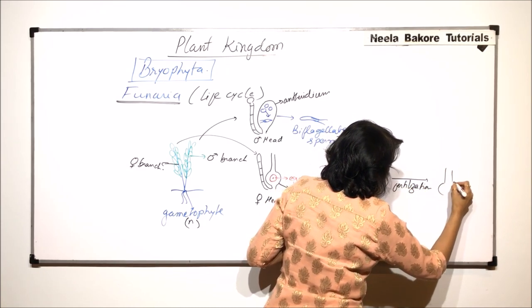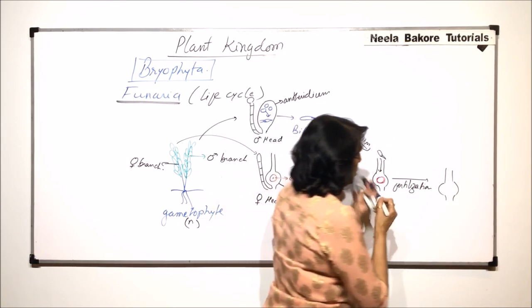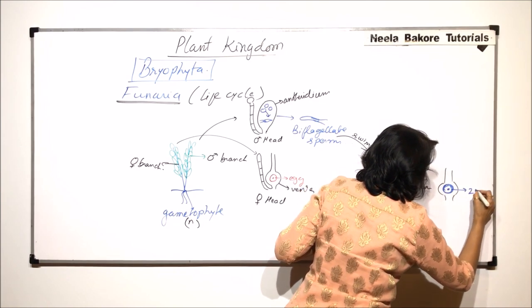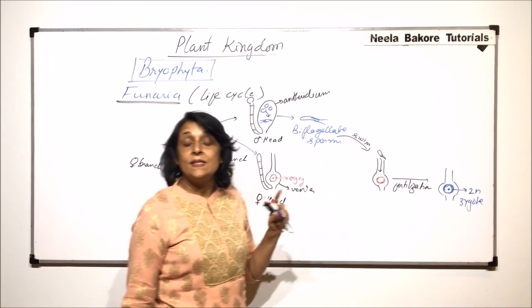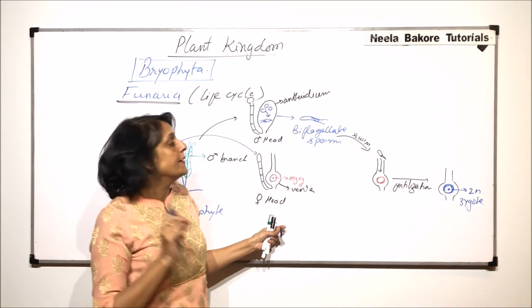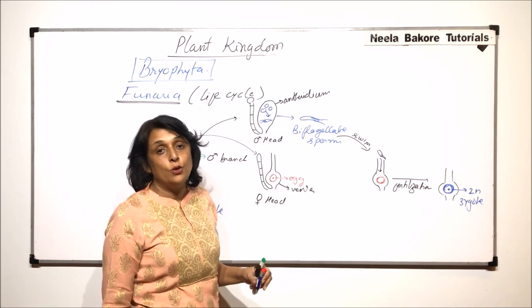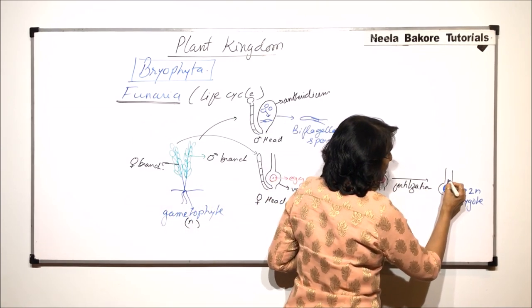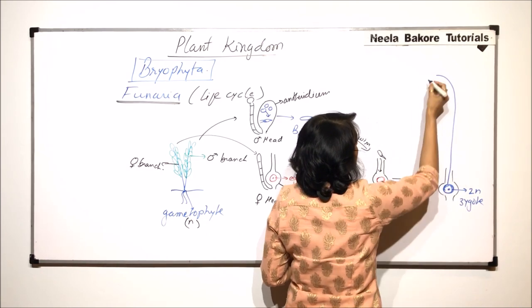After fertilization this egg now changes into the zygote. So after fertilization we have a diploid zygote form. And this zygote is formed inside the venter. This zygote is going to develop into a sporophyte. So this divides by mitotic division and a slender stalk-like structure emerges.